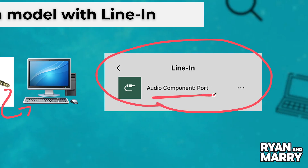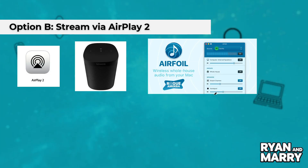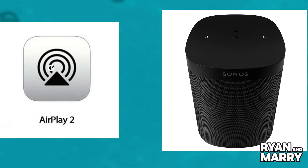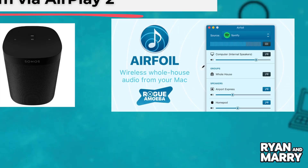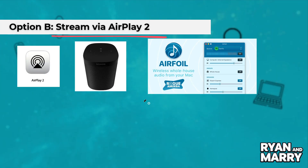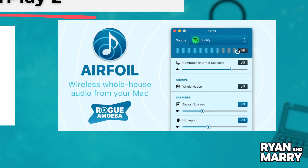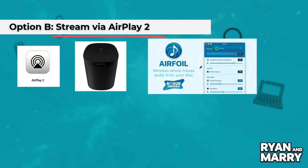Option B: Stream via AirPlay 2. If your Sonos supports AirPlay, like Sonos One, Beam, Arc, Move, or Roam, use software like Airfoil or Stream What You Hear to send PC audio wirelessly to your Sonos. Just select your Sonos as the AirPlay target.